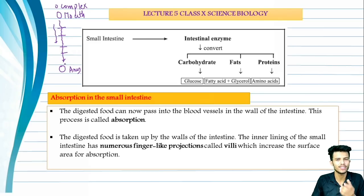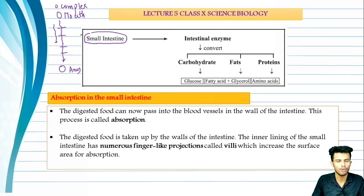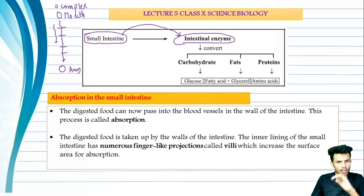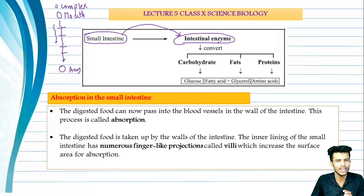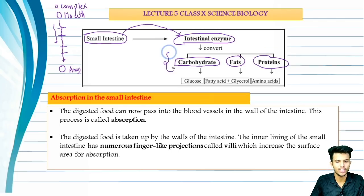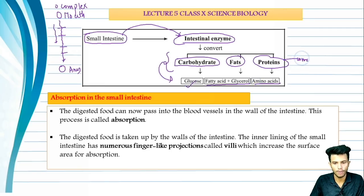The digestive system includes the small intestine, where complete digestion takes place. The small intestine has intestinal enzymes, which are biocatalysts — living catalysts that increase the rate of chemical reactions. These enzymes break down complex foods: carbohydrates are converted to glucose, fats into fatty acids and glycerol, and proteins into amino acids. So the complex foods are simplified.